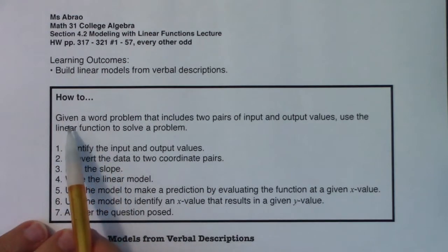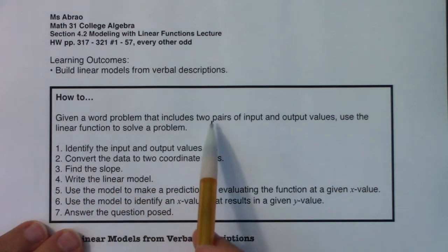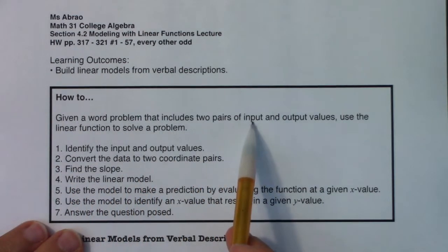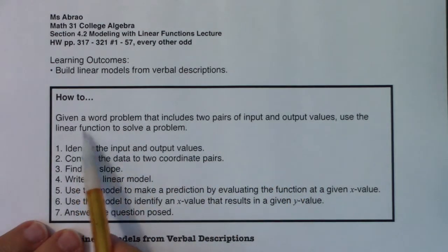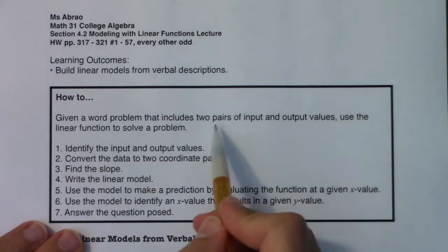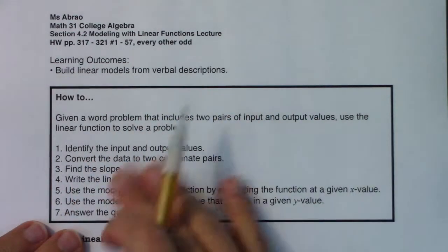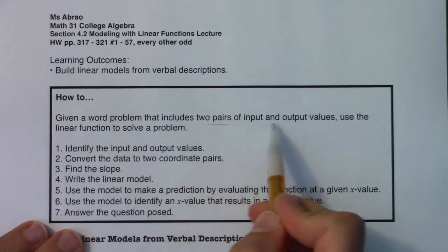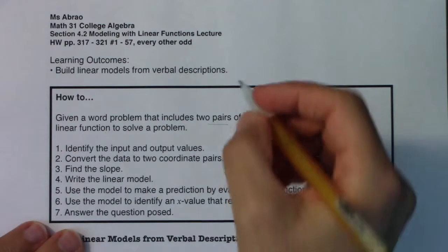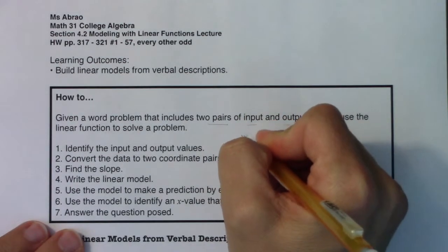So, here's the how-to. Given a word problem that includes two pairs of input and output values, use the linear function to solve a problem. So I want you to hear in this box,